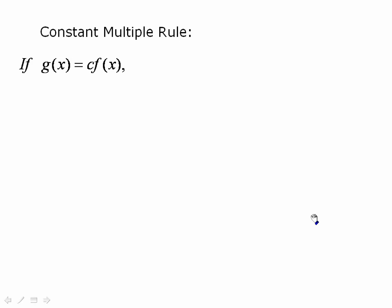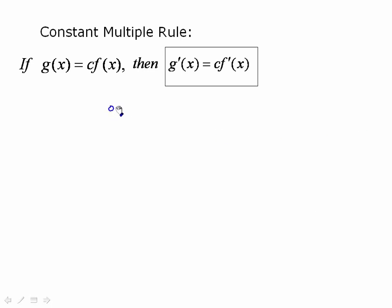The constant multiple rule really flows out of this. If you're given a function g(x) equal to c times f(x), where c is a constant, then the derivative g'(x) is just equal to that constant times the derivative of f(x). In Leibniz notation: d/dx of c·f(x) is equal to c times the derivative of f(x) with respect to x.